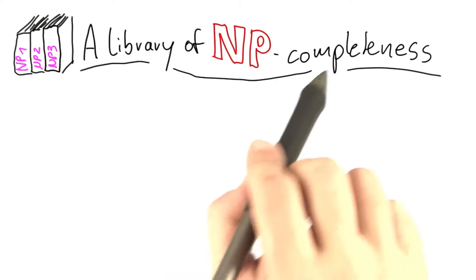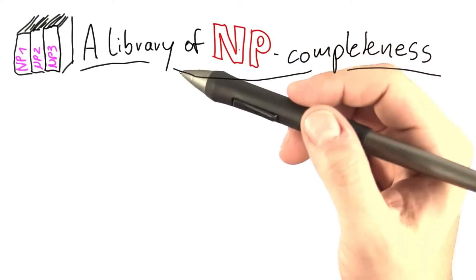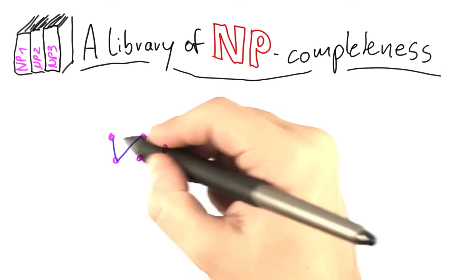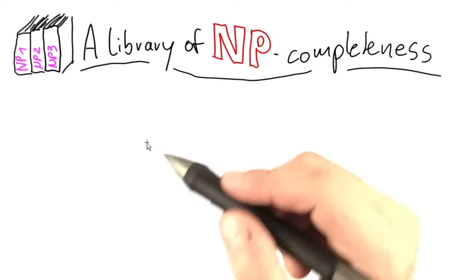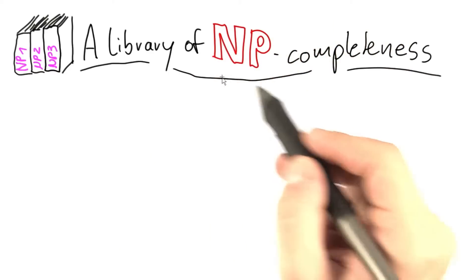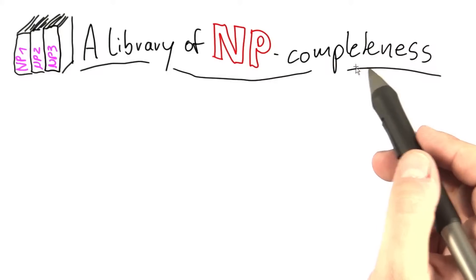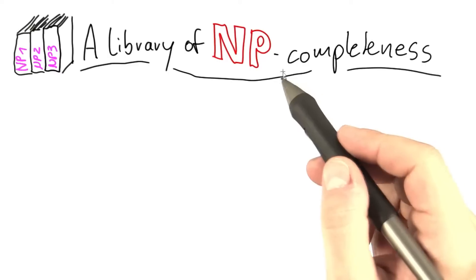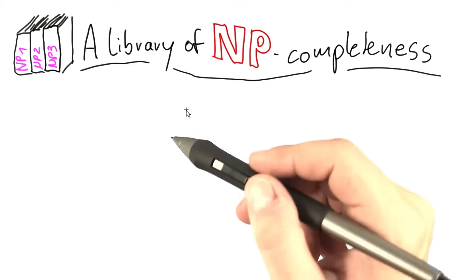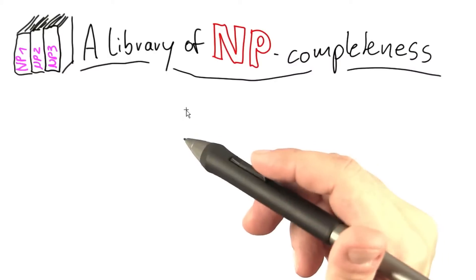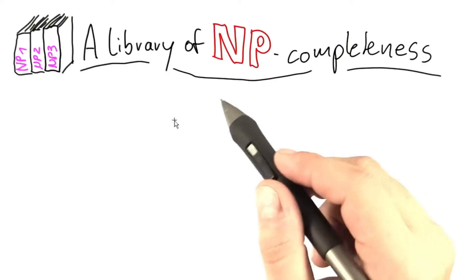Is showing the NP-completeness of a problem always so involved, with playing around with strange constructions such as weird networks? Well, the answer is in a way yes — showing NP-completeness can often involve playing around a lot and some gory details in the proofs. Even today, there are still scientific papers being published that basically just show the NP-completeness of a certain problem or set of problems. So it's not an easy task.